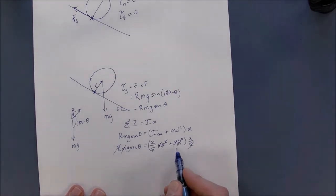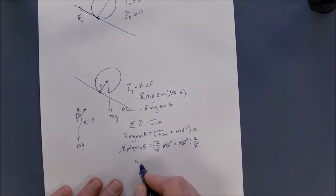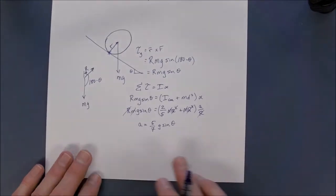right, is going to be two-fifths plus one, which is seven-fifths. Then you'll get that A is equal to five-sevenths g sine theta.